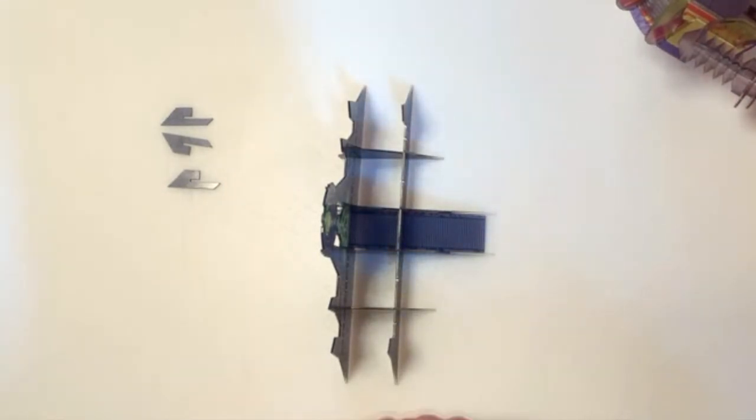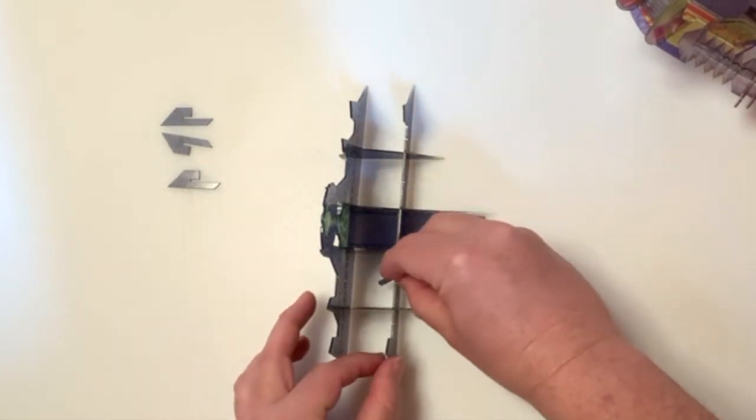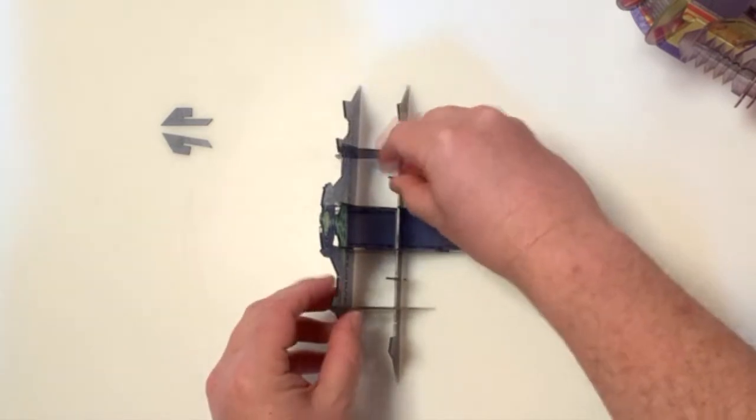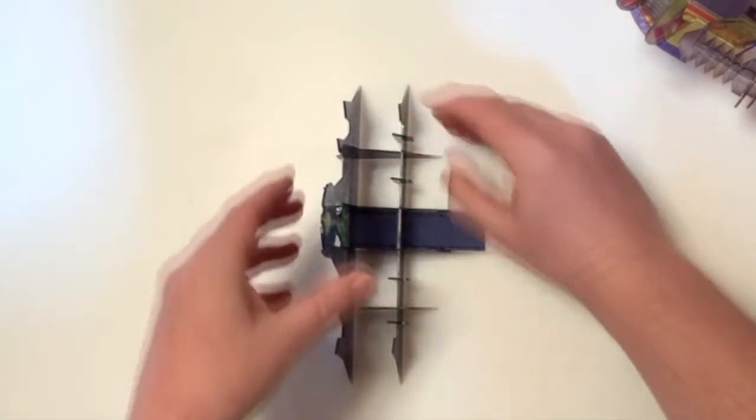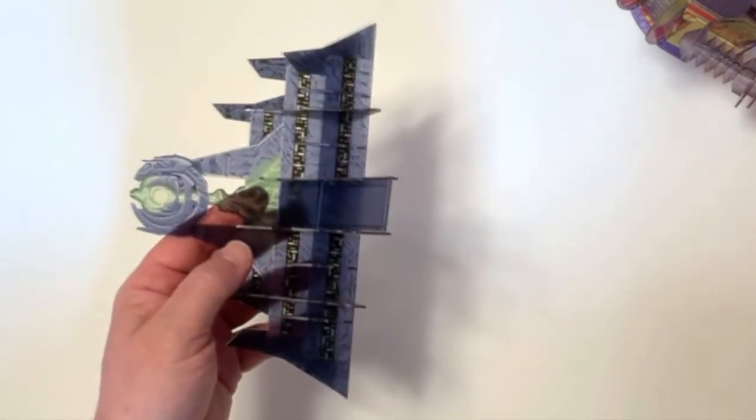Step four, attach the four spikes along the front of the temple and you just go in the last open slots of the piece and your ziggurat is complete.